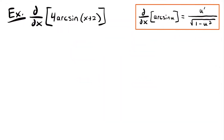Welcome back. Let's start with this example. We want to find the derivative of 4 times arcsine of x plus 2. We know that the derivative of the inverse function of sine, or arcsine of u, is equal to u prime — the derivative of u — divided by the square root of 1 minus u squared.